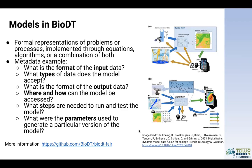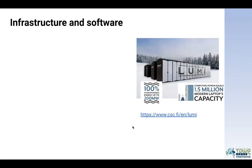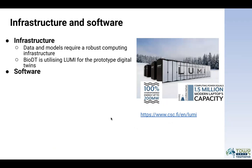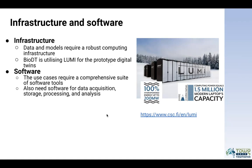I also highly recommend this paper that came out recently, where we talk about the digital twin for BioDT and how different components can provide the frameworks. The data and models require a robust computing infrastructure. In this project, we're working with the Lumi supercomputer to build the prototype digital twins, and we're also exploring how other infrastructure can come in and be integrated. Software plays an important role as the use cases will require different types of software tools, and we also need software for data acquisition, storage, processing, and analysis.